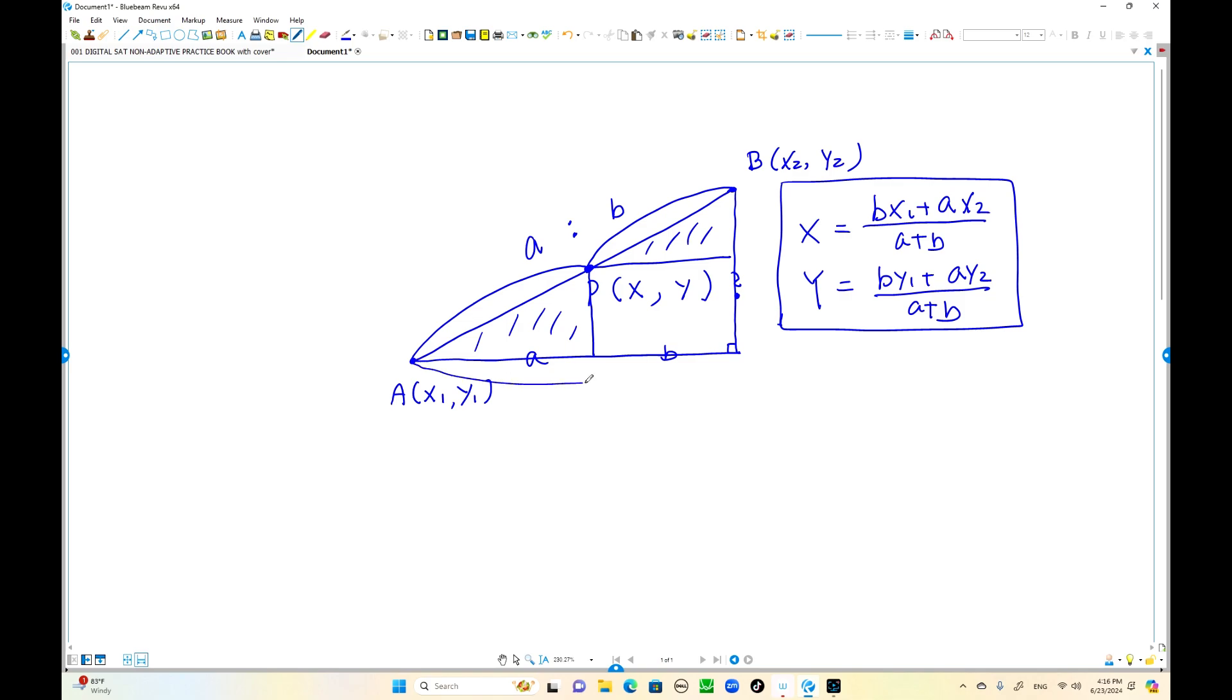What is the length of this side? This side is x2 minus x1, the horizontal distance. But we take only A out of A plus B. So this distance, I'm going to call distance D1. D1 equals x2 minus x1, the entire distance. We take only the portion of A out of A plus B.